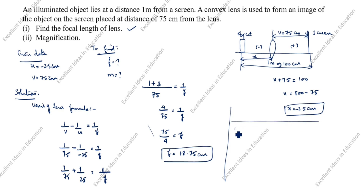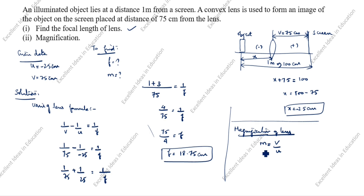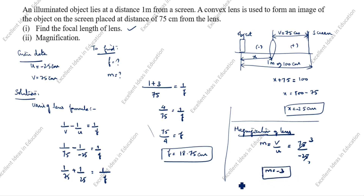Now we calculate the magnification. For a lens, magnification m equals v divided by u — note that the lens formula for magnification is different from a mirror. So m equals 75 divided by minus 25, which gives m equal to minus 3. Thanks for watching this video.